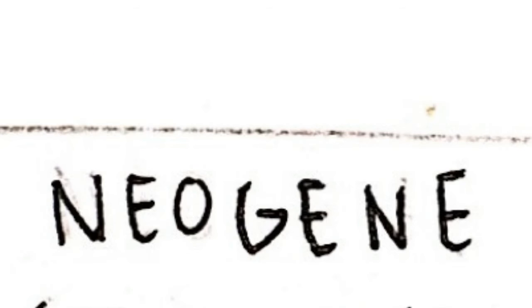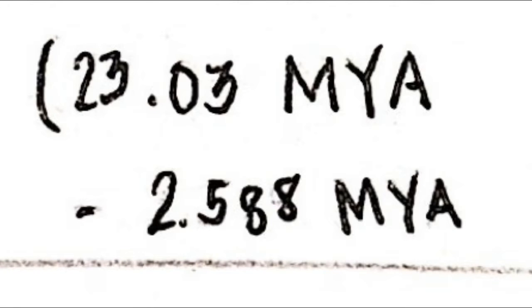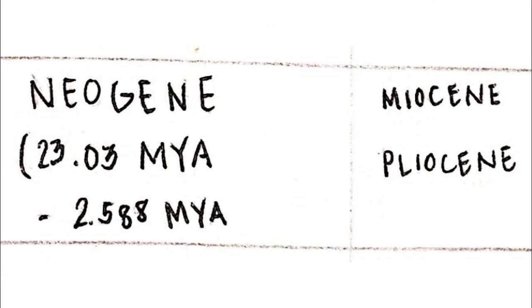The second period is the Neogene period, which began 23.03 million years ago and ended 2.58 million years ago. This is composed of the Miocene epoch and the Pliocene epoch.